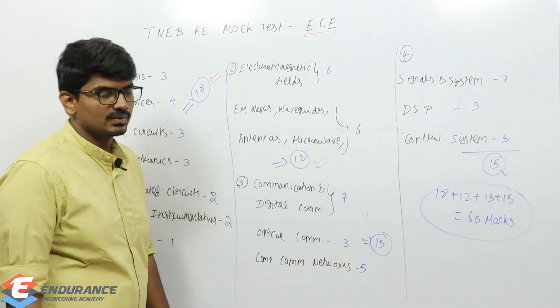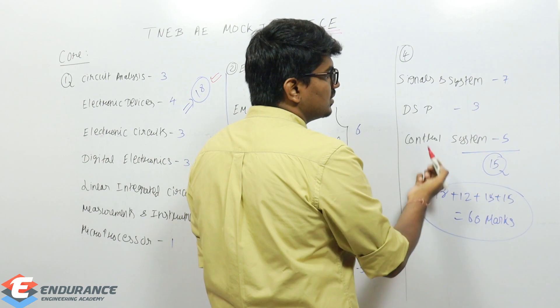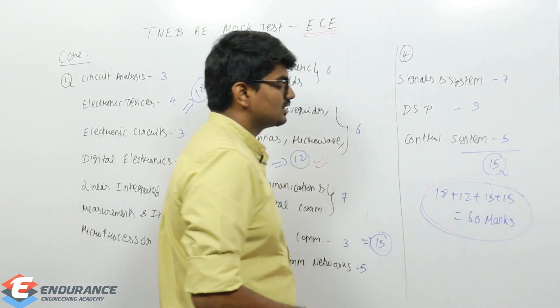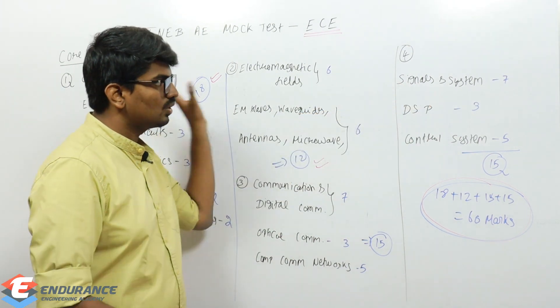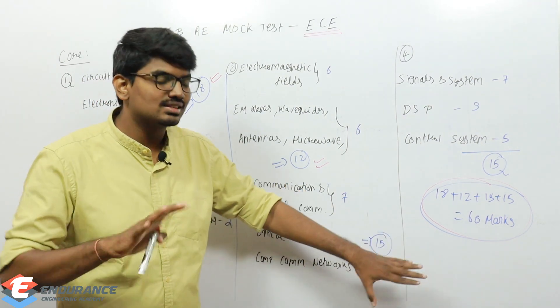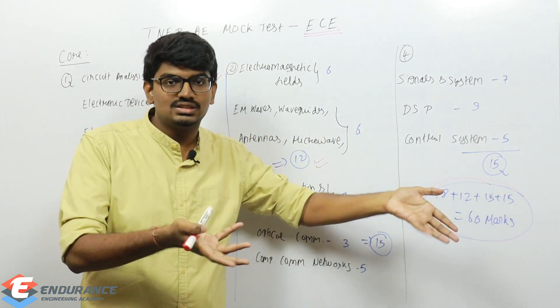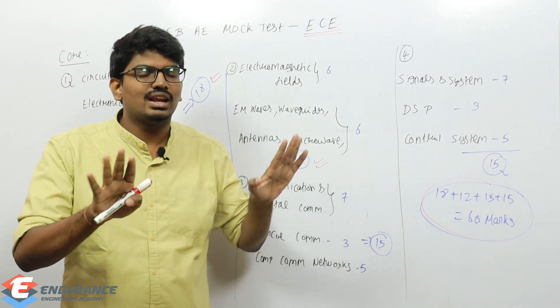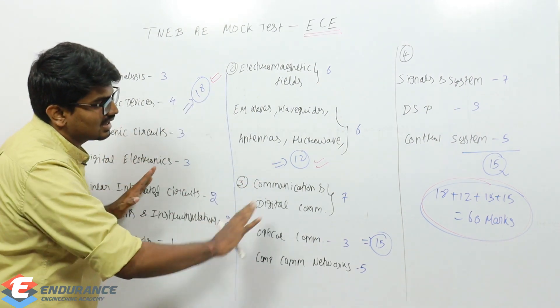Coming to fourth part: signals and systems is seven marks, DSP is three marks, and control systems is five marks - overall 15 marks. So Part 1 is 18, Part 2 is 12, Part 3 is 15, Part 4 is 15 - overall the core papers will be 60 marks. As I said, few tests may have seven for signals and systems, few will have eight, few have six, so one or two marks deviation will be there, but overall the range will be in this manner.